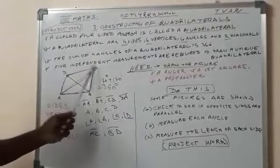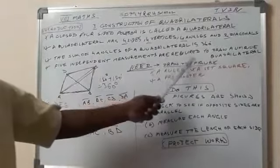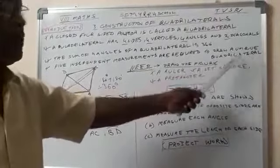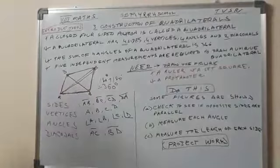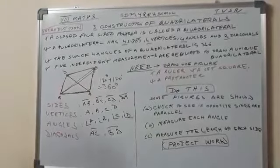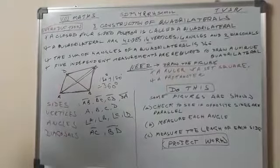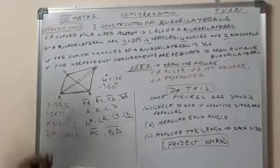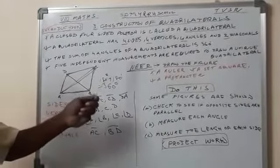Next, five independent measurements are required to draw a unique quadrilateral. How many measurements are required for drawing a quadrilateral? Five independent measurements.